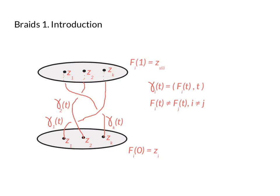In this example, the first strand starts at z_1 and ends at z_3. K is 3 in this example. The second strand starts at z_2 and ends at z_2, and the third strand starts at z_3 and ends at z_1. So in this case, the permutation s would be the permutation (1 3), which just switches these two.